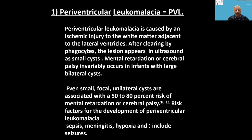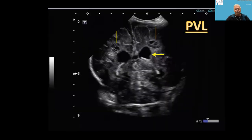Today, mental retardation or cerebral palsy invariably occurs in infants with large bilateral cysts. Even small focal unilateral cysts are associated with a 50 to 80 percent risk of mental retardation or cerebral palsy. Risk factors for development of periventricular leukomalacia are sepsis, meningitis in neonates or children, and hypoxia in fetuses.